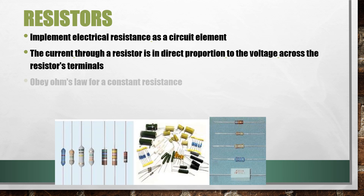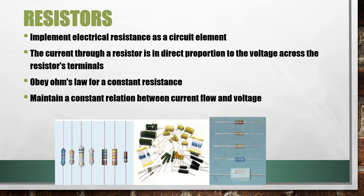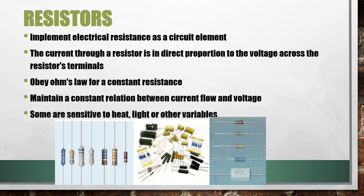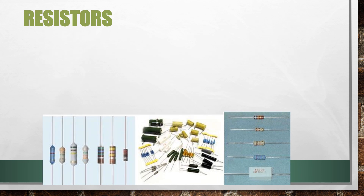The electrical behavior of a resistor obeys Ohm's law for a constant resistance. A resistor is a device used in electrical circuits to maintain a constant relation between current flow and voltage. Some resistors are sensitive to heat, light, or other variables. Resistors are one of the most used components in a circuit.